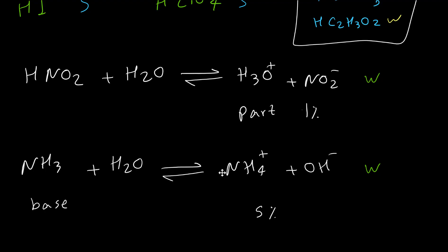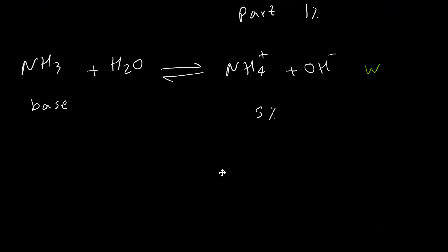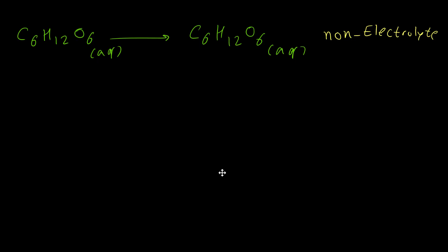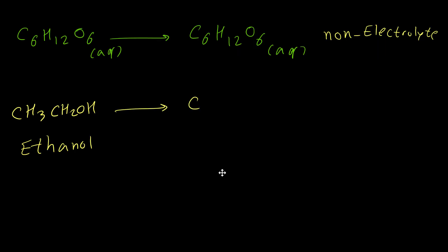The last category is non-electrolytes. There are many compounds like glucose (sugar) that dissolve in water easily but do not dissociate during this process. So a solution of glucose has no conductivity — it is a non-electrolyte. Another example is ethanol (alcohol). When we add alcohol to water, it remains unchanged after dissolution. So alcohol is also a non-electrolyte, and its solution has no conductivity.